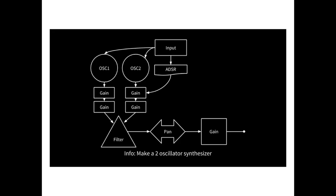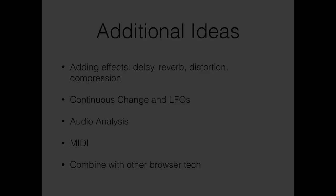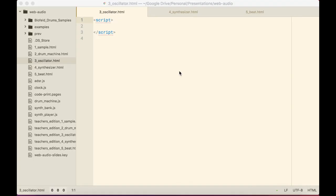To recap: our input goes into two oscillator nodes and an ADSR envelope. Those combine on a gain to shape the notes into a natural shape. There are two gains below that to mix oscillator one and two. We have a filter after that to remove unpleasant parts of the sound, some panning to set sounds in different places in space — you don't want all your sounds coming from the same place — and then each track has its own gain node to mix it against the other instruments.